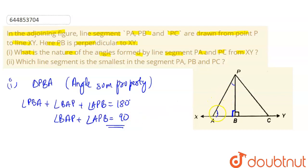So that means one angle is less than 90 degrees. Angle BAP will be less than 90 degrees and angle APB will also be less than 90 degrees. That means they are acute angles, because their sum is equal to 90 degrees.